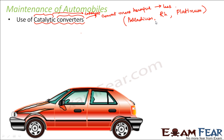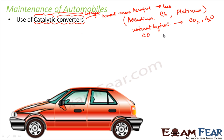These catalysts help to convert the unburnt hydrocarbons into carbon dioxide and water. For example, unburnt hydrocarbons are more harmful, so they get converted into carbon dioxide and water, which are less harmful. Similarly, harmful gases like carbon monoxide and nitrogen oxides are converted into carbon dioxide and nitrogen, which are less harmful. That is how catalytic converters work.